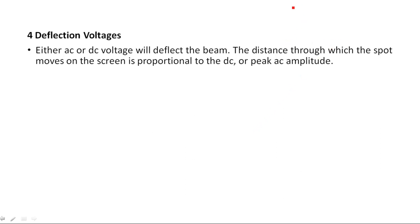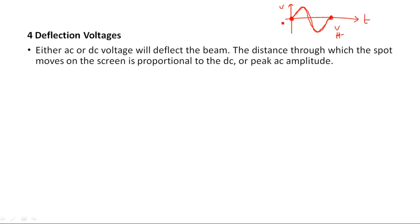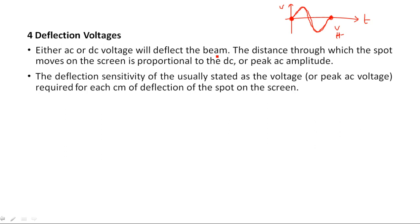For example, with a sinusoidal waveform, the electron beam must make two movements: a horizontal movement and a vertical movement. The electron beam travels in both directions — horizontal and vertical — to trace the waveform. To accomplish this deflection, either AC or DC voltage may be used. The distance through which the spot moves on the screen is proportional to the DC or peak AC amplitude.